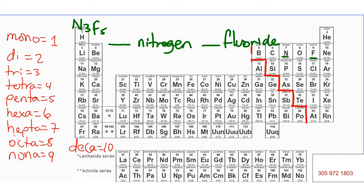So it's 3N. So I call that tri. And it's 5 fluorine. So I call that, according to my list, penta. So the compound N3F5 is named trinitrogen, one word, pentafluoride. Because I have 3 nitrogens and I have 5 fluorines. And it becomes fluoride. This is covalent compound naming. These are non-metal namings. These are molecules.